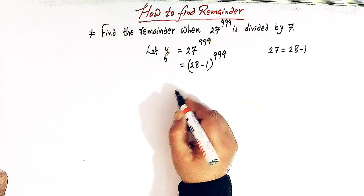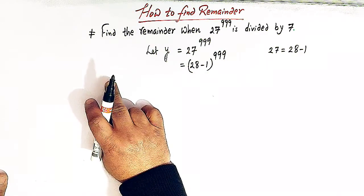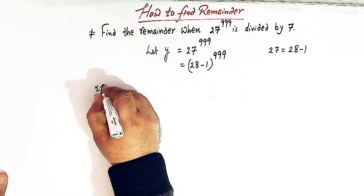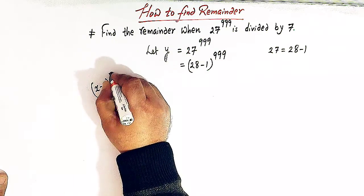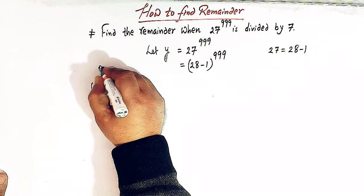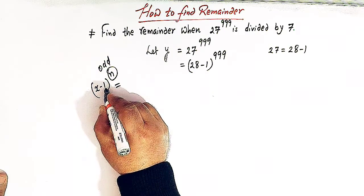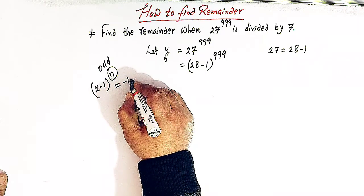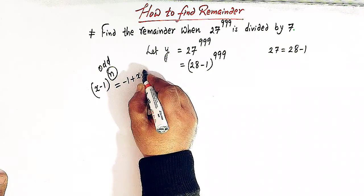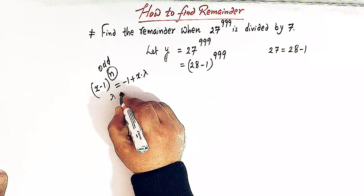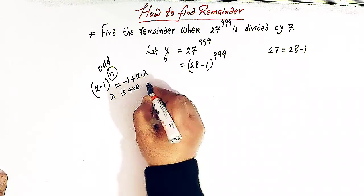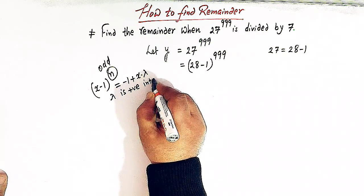Now, here I will make use of the same concept that is if we have x minus 1 raised to n and this n is odd, then we have x minus 1 raised to n as minus 1 plus x times lambda where lambda is some positive integer.